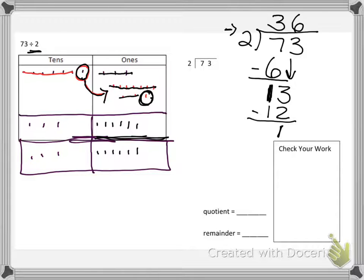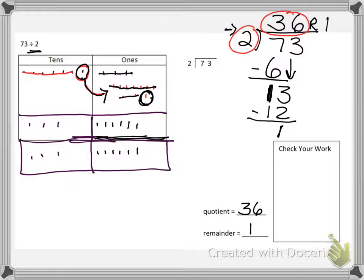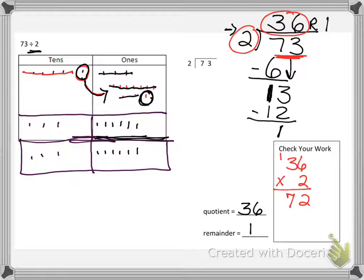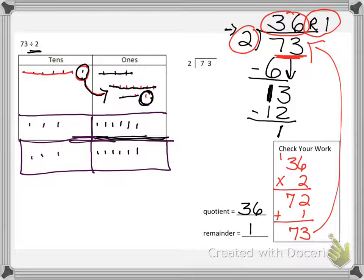So this becomes 36 remainder 1. Our quotient, which is our answer to our division problem, is 36. And we have a remainder of 1. Now, how to check this — the inverse operation of division is multiplication. So we're going to take this number and multiply it with this number. 36 times 2 is 72. We got a 72, but we need to add the remainder — plus 2 — and we get 73. There's our match. We have a 73, and I got a 73 when we checked. Check. We did a good job on this one.